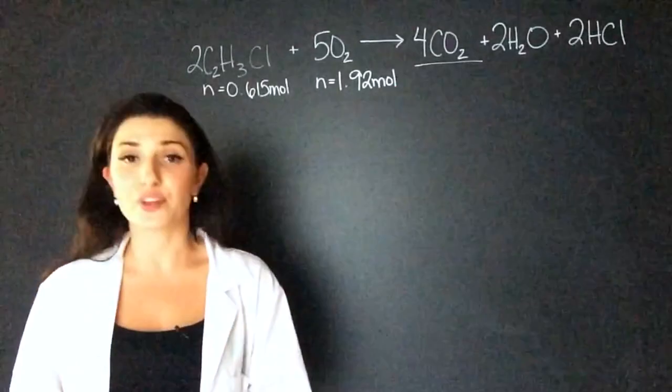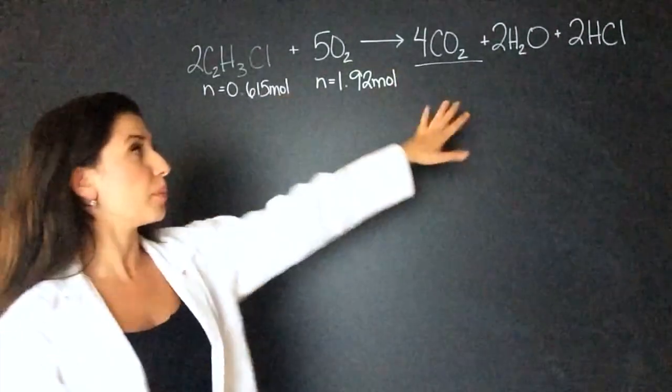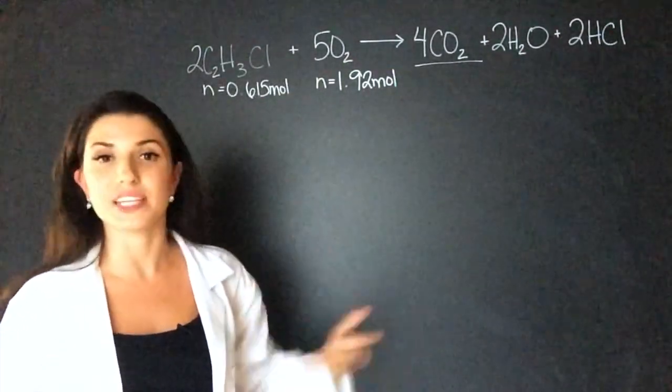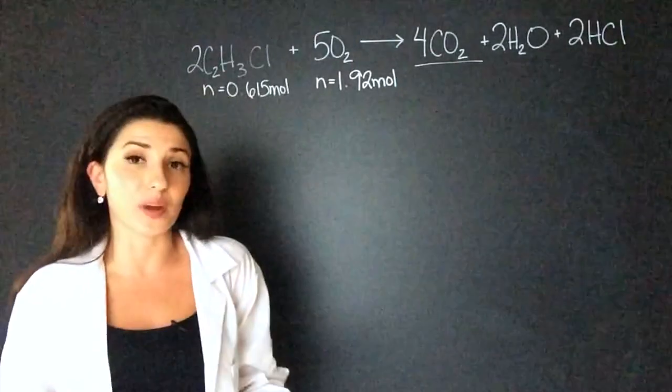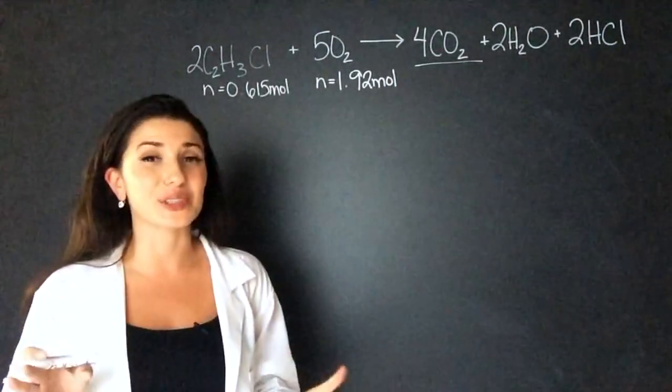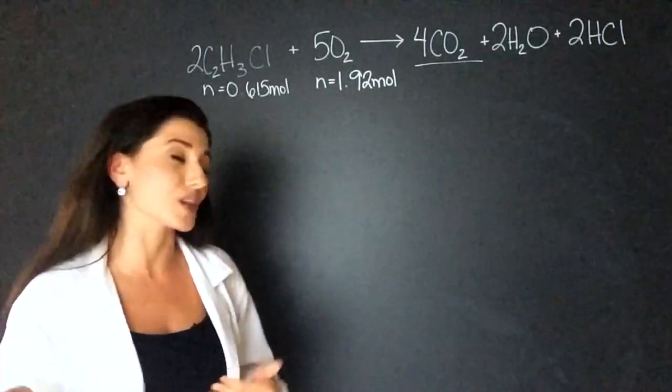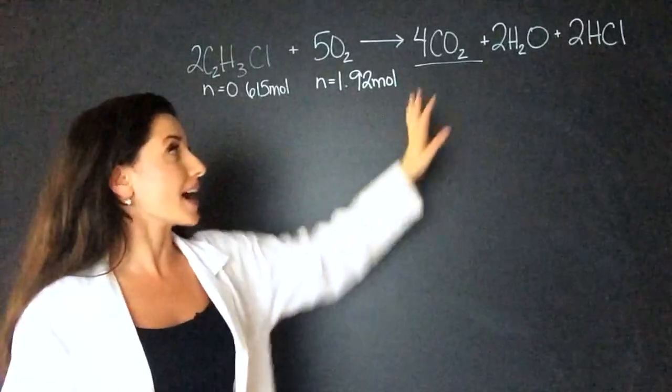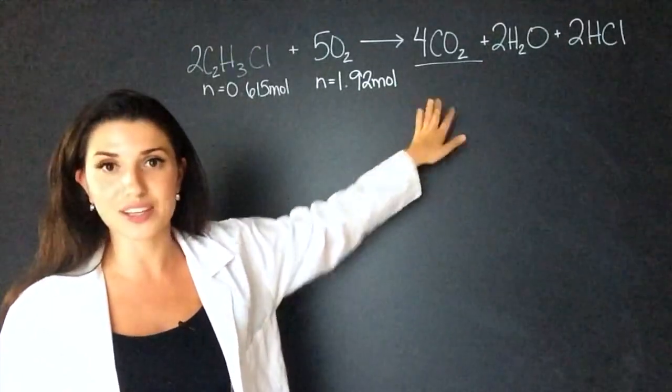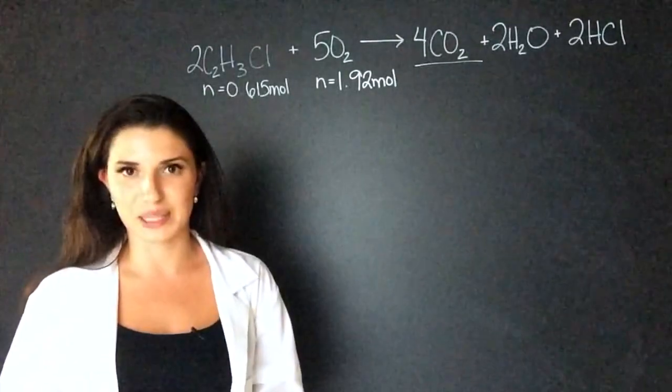So another way to find the limiting reagent is actually calculate how many moles you're going to get in the products with each one. And then whichever one gives you the least moles will be the limiting reagent. This is actually a very good method if they're going to ask you anyway what the moles are. For example, with this question, they're asking you how many moles of carbon dioxide. So we can actually do that step while finding the limiting reagent.